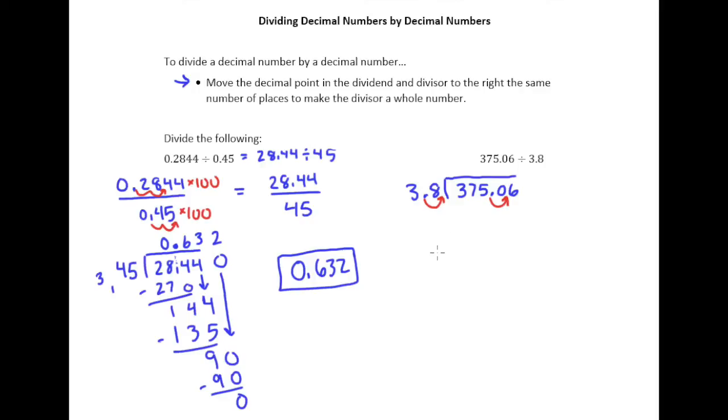And I always suggest at this point, go ahead and rewrite the problem, just to make sure it's all nice and cleaned up. So what we really have is 3750.6 and 38.